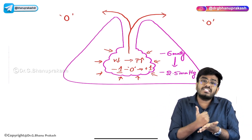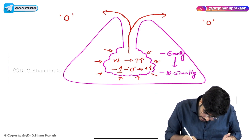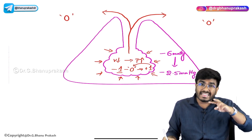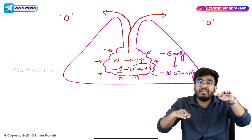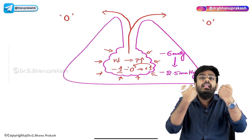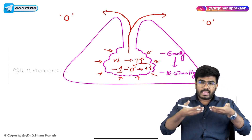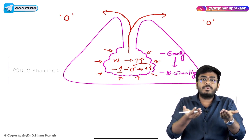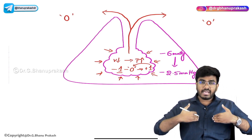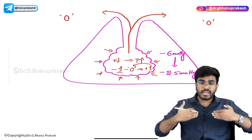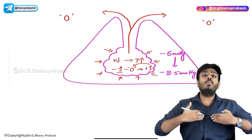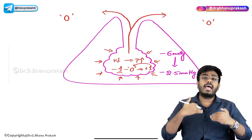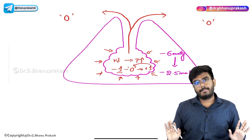Air will move out until equilibrium is attained — until that plus 1 comes back to 0. So air is going in during inspiration due to negative pressure inside the alveolus, and air is coming out during expiration due to positive pressure inside the alveolus. This exchange happens until equilibrium is attained.